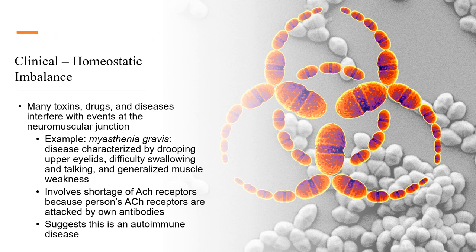The neuromuscular junction can be the site of damage from toxins, certain drugs, and diseases. Botulism is a bacterial toxin that can cause the neuromuscular junction to stop functioning — it blocks acetylcholine from being able to open those ion channels. There is also myasthenia gravis, characterized by drooping upper eyelids, difficulty swallowing and talking, and generalized muscle weakness. It involves a shortage of acetylcholine receptors because the person's acetylcholine receptors are attacked by their own antibodies — an autoimmune disease that prevents muscles from contracting normally.